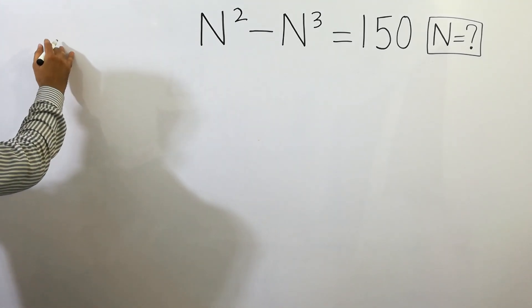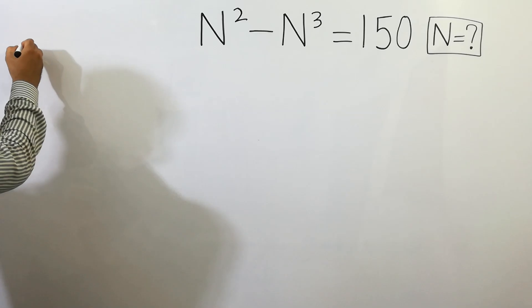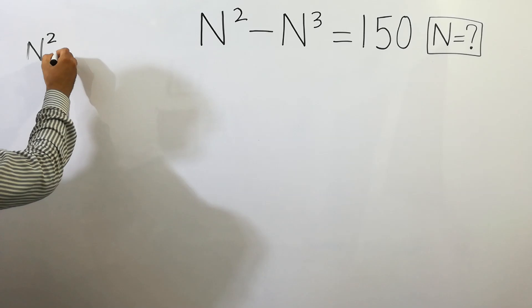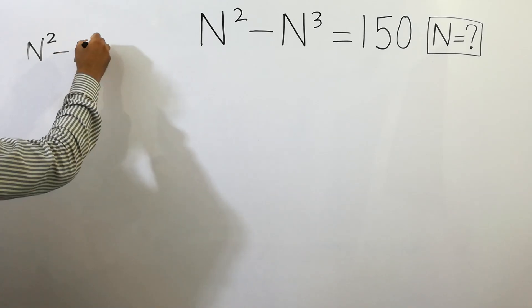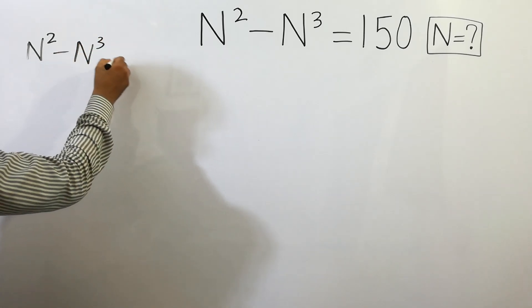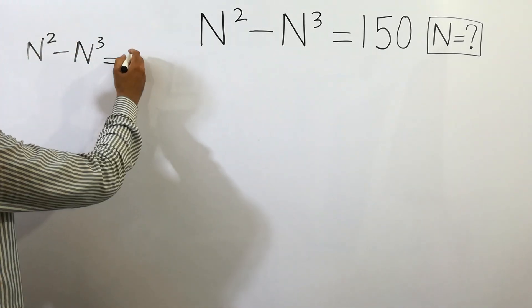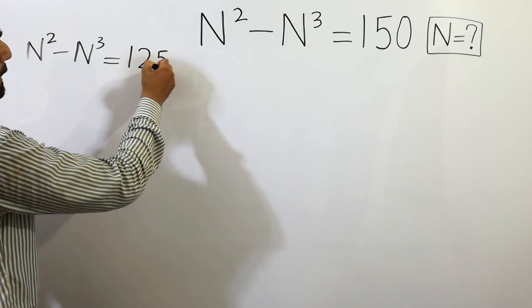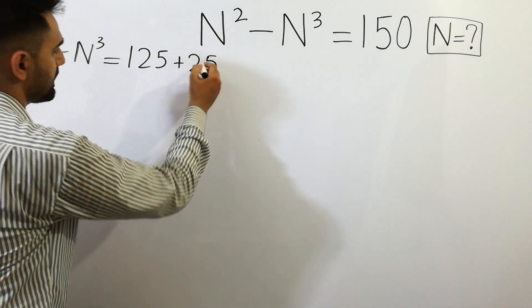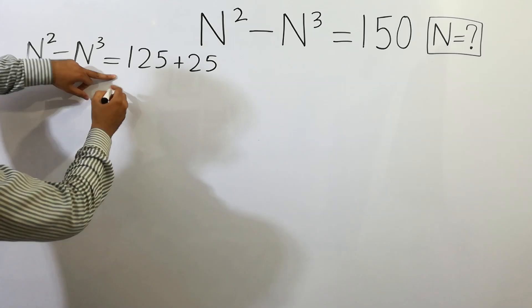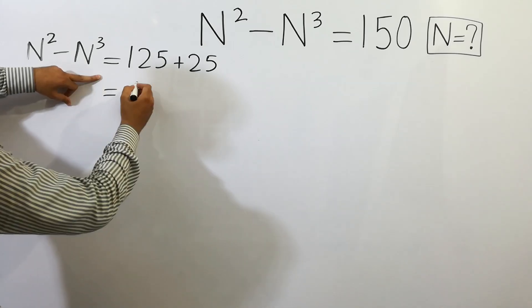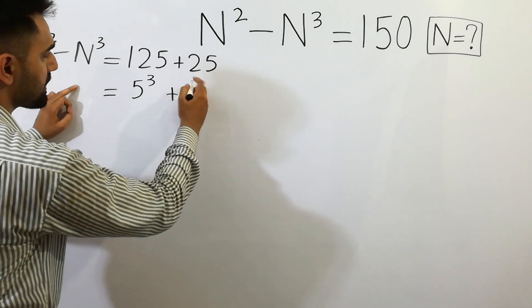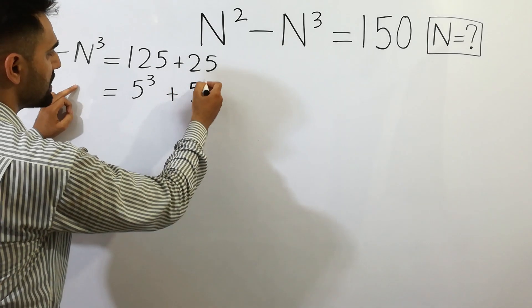We can write n squared minus n cubed equals to 150 as 125 plus 25. Here, 125 equals to 5 cubed and 25 equals to 5 squared.